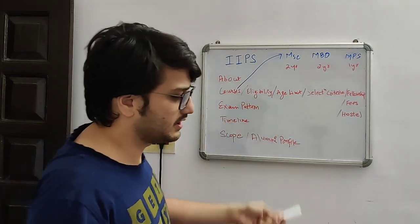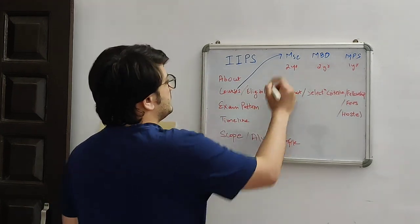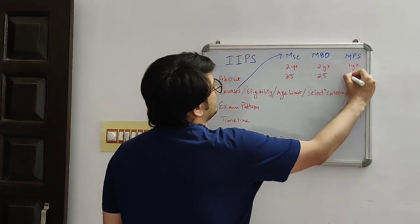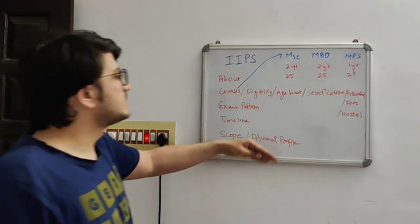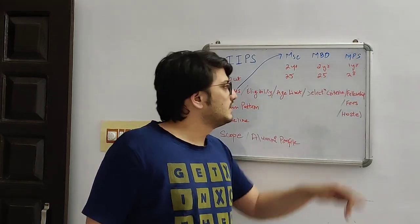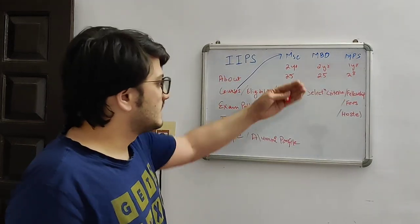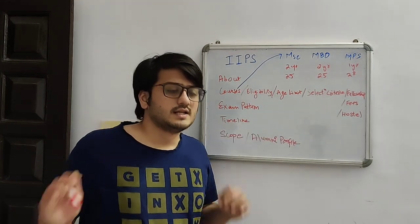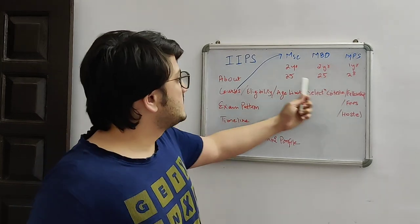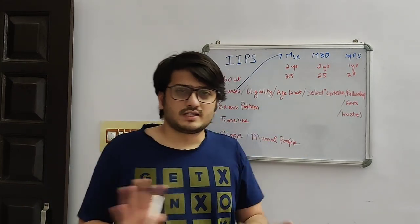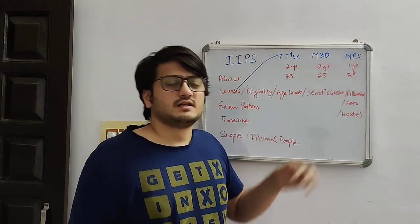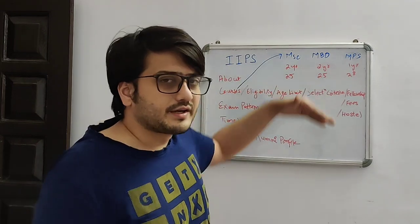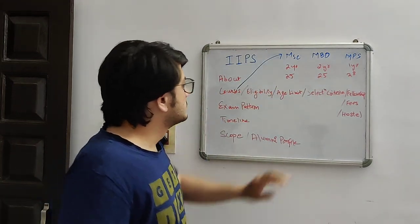There is also an age limit. The upper age limit is 25 years to pursue MSc and MBD, and 28 years for MPS. That's the age limit. As for selection criteria, you just need to give an objective paper entrance test. In the case of MPS, after the objective paper test, there is also an interview — so there is an extra level for MPS. That's the selection criteria.